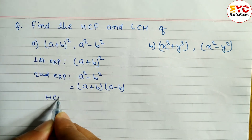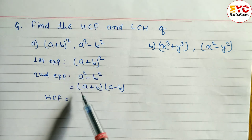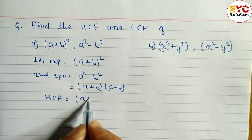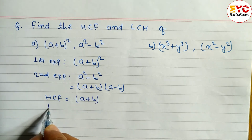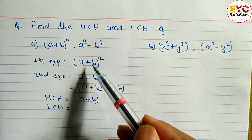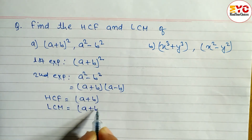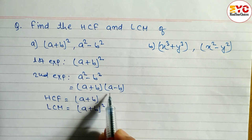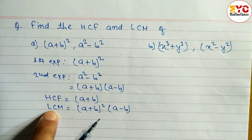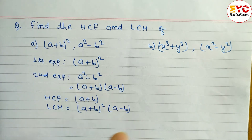Now we have to find out SCF. SCF means common element. Here we have A plus B whole square and here we have A plus B, so we take the lowest power: A plus B. To find out LCM, we take the highest power, which is A plus B whole square, and we also write the remaining term A minus B. In LCM, we take the highest power and include the remaining terms as well.